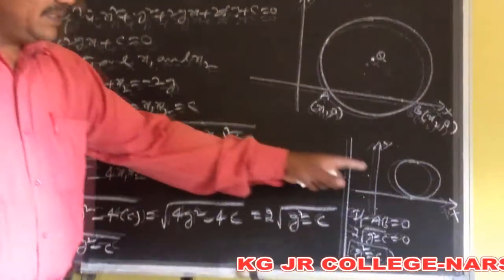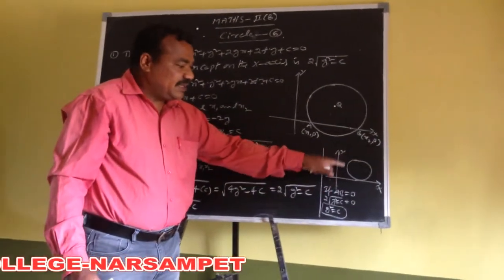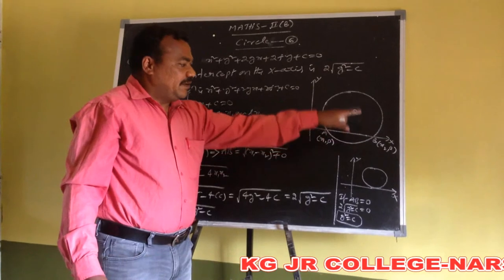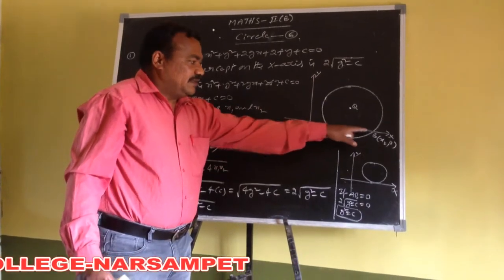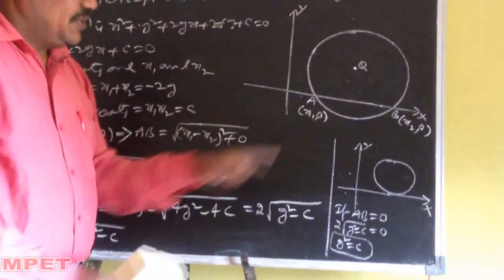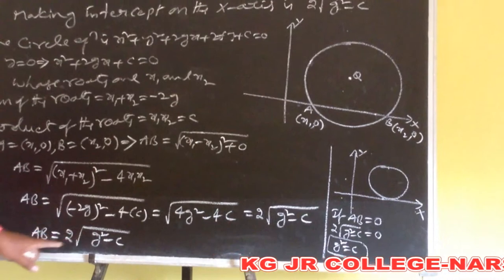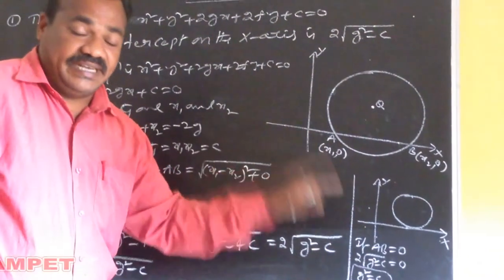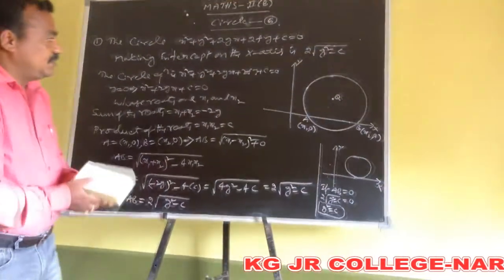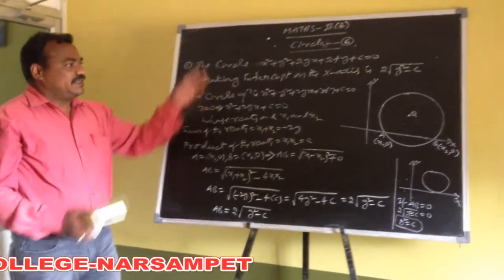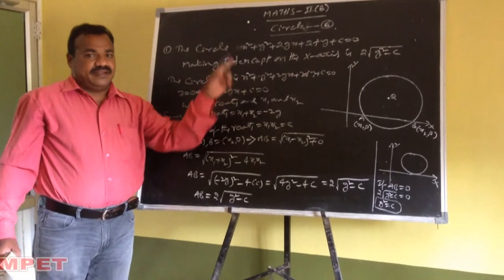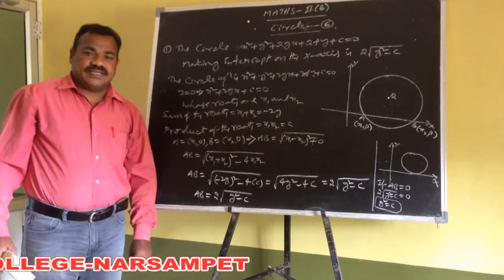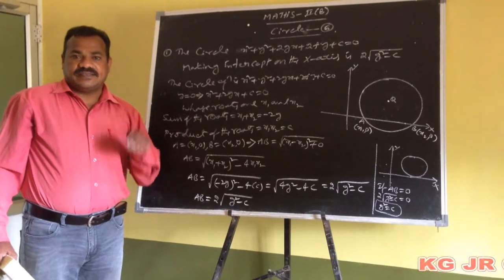That means the circle intersects the x-axis at one point. So to summarize: the intercept the circle makes on the x-axis is 2 into root of g square minus c. If the intercept is 0, the circle touches the x-axis at one point, and the condition for this is g square equals c.